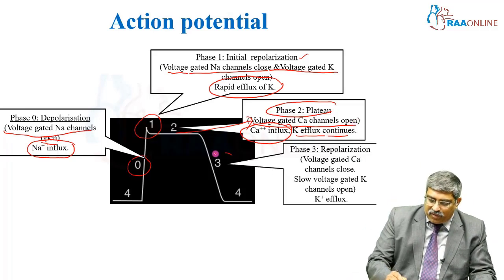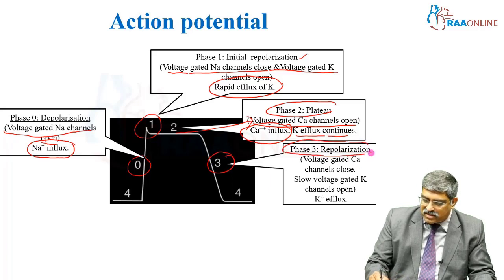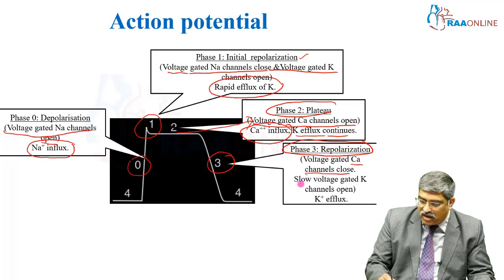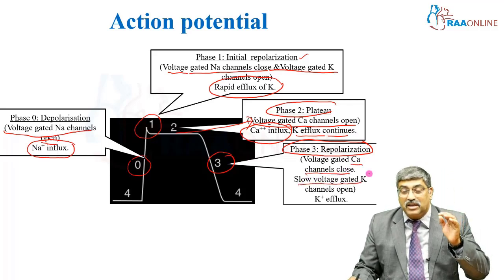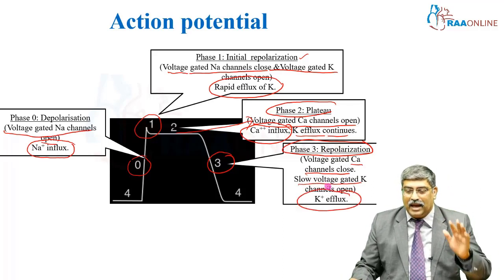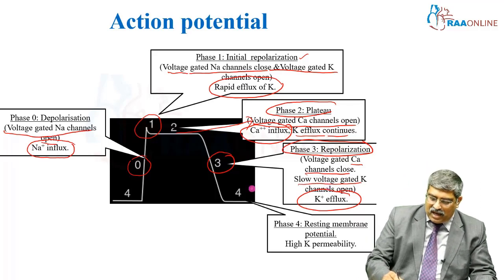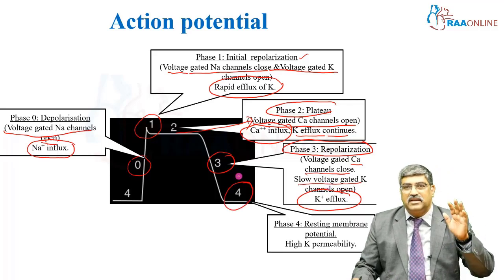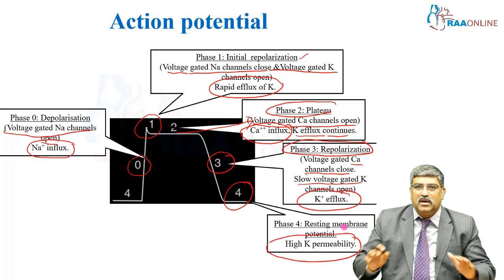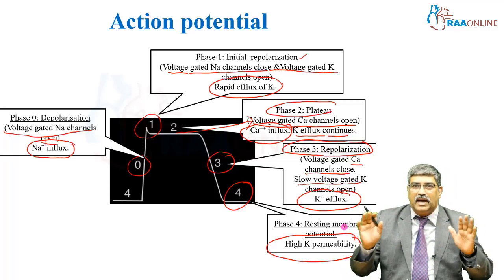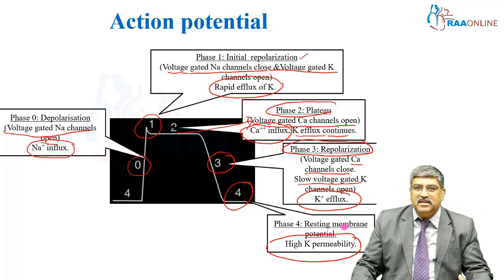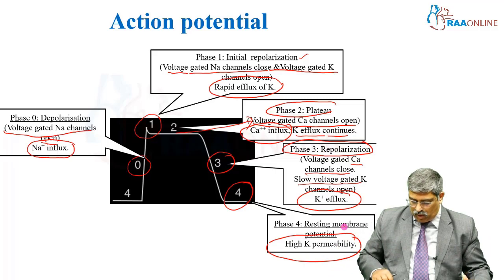Coming to phase 3, it is repolarization. Here, the voltage-gated calcium channel closes and the slow voltage-gated potassium channel is still open and potassium flux is still happening. Coming to phase 4, it is resting membrane potential and there is high potassium permeability. These are all the various phases of action potential and what happens to individual channels and how the electrolytes come and go out.